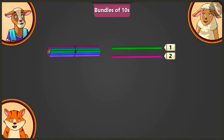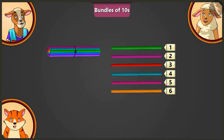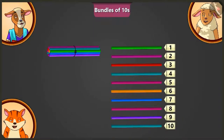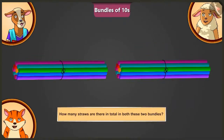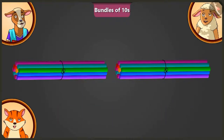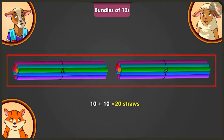One, two, three, four, five, six, seven, eight, nine and ten. Billy, how many straws are there in total in both these bundles? In both these bundles, there are ten and ten — twenty straws in total.